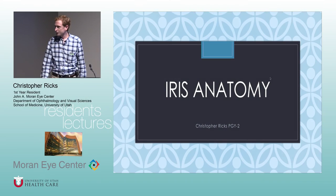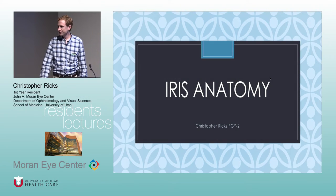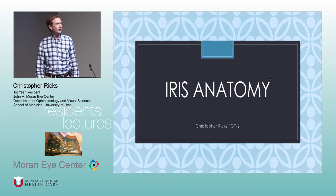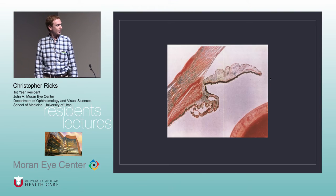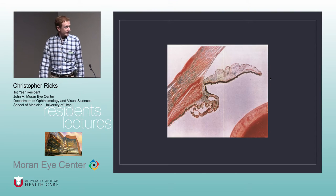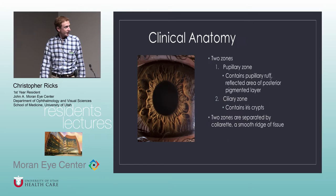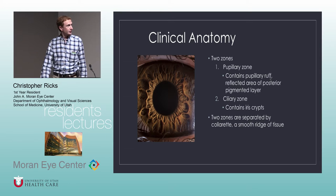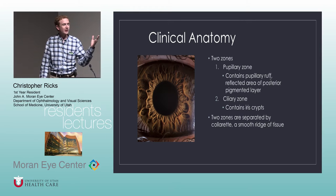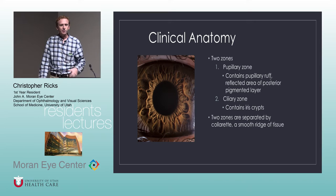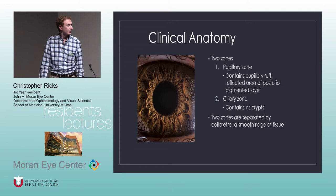We're going to get started. I am the first one of this morning's lectures, and I'm talking about the iris anatomy. There's just a histologic picture of the iris. There are two ways to think of anatomy: the clinical anatomy and then the histologic anatomy. So first let's talk about the clinical anatomy.